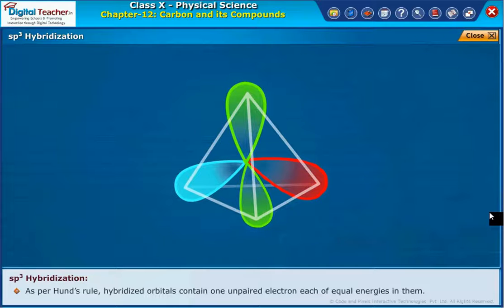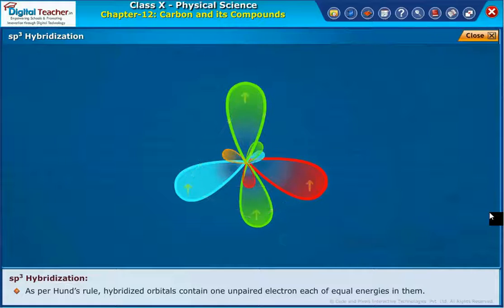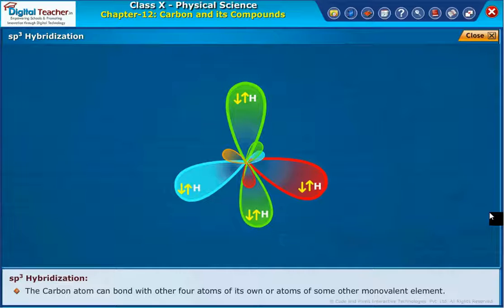As per Hunt's rule, hybridized orbitals contain one unpaired electron each of equal energy. The carbon atom can bond with four other atoms of its own or atoms of some other monovalent element.